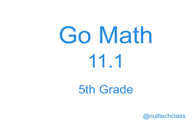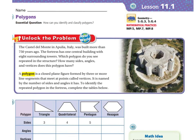Good morning. Today's lesson is 11.1. Our essential question is: how can you identify and classify polygons? Let's unlock the problem. The Castle de Monte in Apulo, Italy was built more than 750 years ago. The fortress has one central building with eight surrounding towers. Which polygon do you see represented in the structure? How many sides, angles, and vertices does the polygon have?